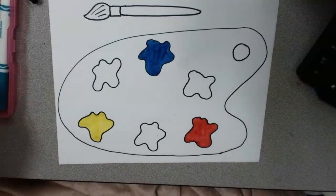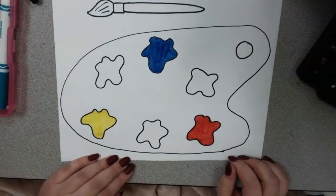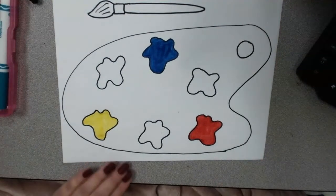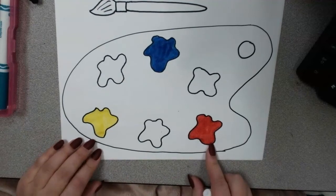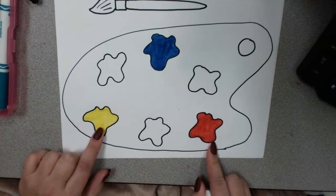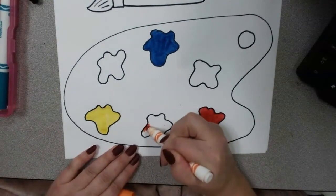On the color wheel, the secondary colors go in between the two primary colors that make them. So, for instance, I'm going to do one and then you're going to have to do the other on your own. So, if I have red and yellow, what do red and yellow make? Orange. So, in between the red and the yellow, I should put orange.